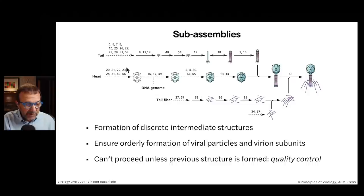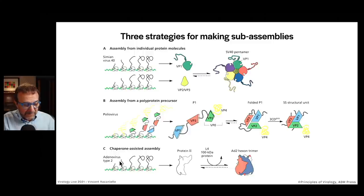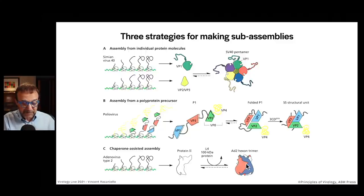The phage people just gave numbers to the proteins — protein 9 and 19 — so it doesn't tell you anything about the function. Here, at least, the proteins are called VPs, virion proteins, so that tells you it's a structural protein. Another way to make a sub-assembly is chaperone-assisted, where the component of what's going to be the hexon for adenovirus — protein 2 — is produced individually, and then a viral chaperone called the L4 100-kilodalton protein helps this protein assemble into trimers. There are also cellular chaperones that assist in assembly reactions.